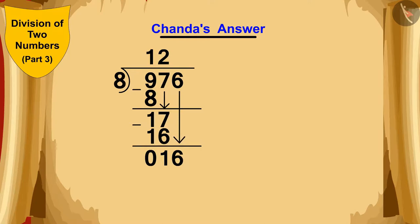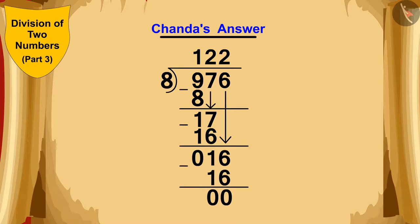Once again, she thought that 8 times 2 is 16. So, she could divide 16 by 8. She quickly wrote 2 above, and at the bottom, she wrote 16. 16 minus 16 is 0. In this way, Chanda got the answer of 122 rows.